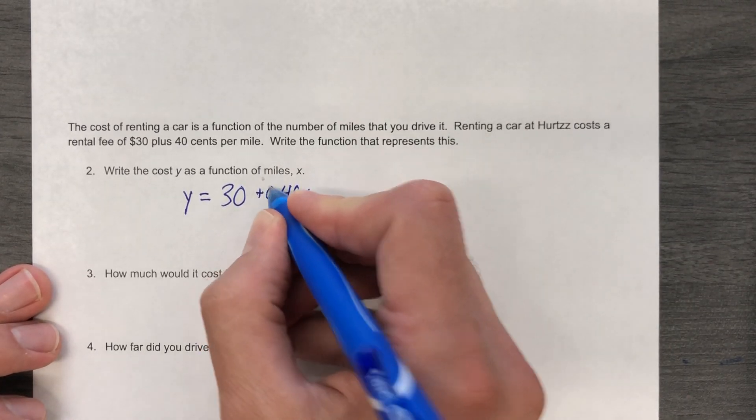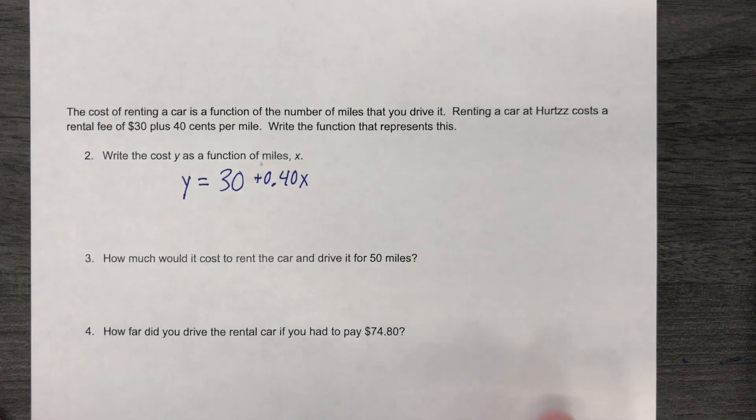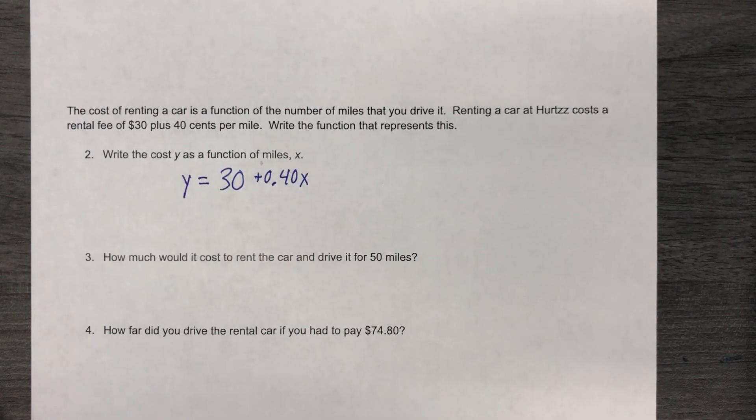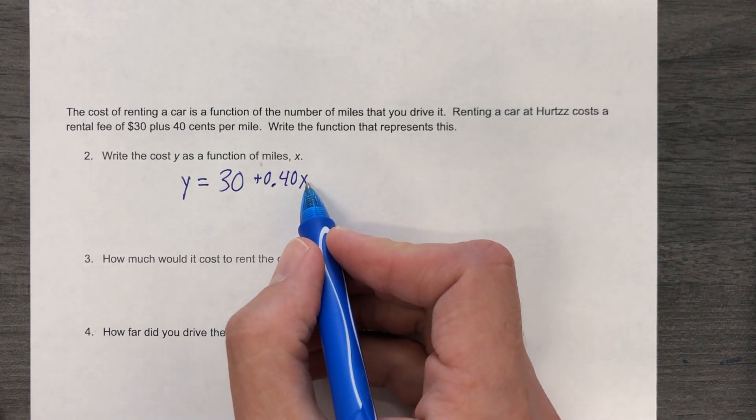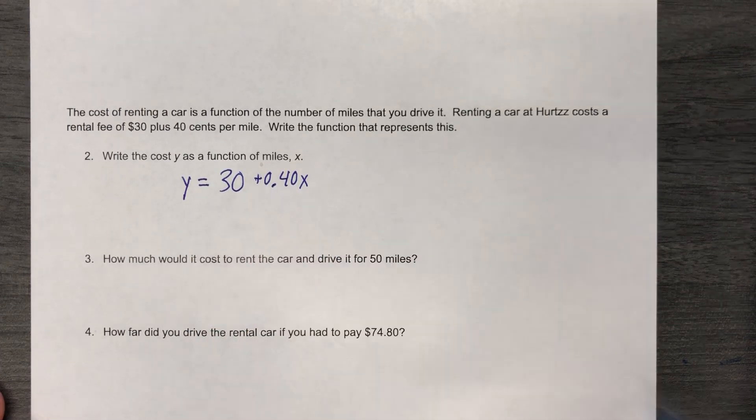So 0.40 times X. I left the decimal off. There we go, let's fix that. I was going to do it on purpose and then use it as an object lesson of making sure you put your decimal in the right place. But yeah, we'll just go for it. And that's it. So it kind of makes sense. If I drove one mile, I'd have $30 plus 0.4, so $30.40.